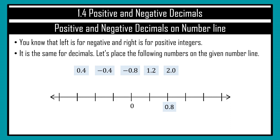You have already learned that towards the left of 0 is negative, and towards the right of 0 is the positive integers. So this is the same for decimals. We are going to place the following numbers. Remember that for negative decimals, it will be on the left side, and for positive decimals, it will be on the right side.